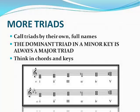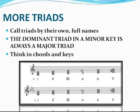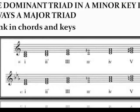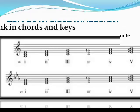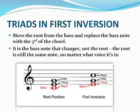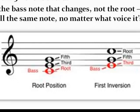In addition to naming triads by their letter names, they can also be named by their Roman numerals. For example, a C major triad in the key of C major is a I chord. An F major triad in C major is a IV chord. When we have a triad in root position, the root of the triad is the bottom note. To write a first inversion triad, you would take the root of the chord and move it up to the top of the triad. When in first inversion, C is still the root; however, the bass or the bottom note is now E.